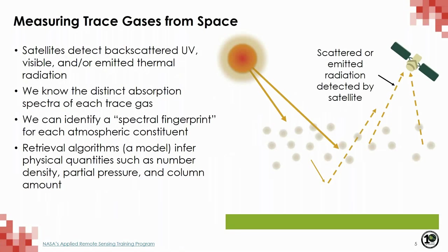Satellites detect the backscattered and/or emitted thermal radiation, a process represented in this graphic on your screen. Each trace gas has a distinct spectra. So if we know how and by what amount different molecules absorb radiation at different wavelengths, we can identify a fingerprint for each atmospheric constituent. Based on the radiation detected by the instrument, retrieval algorithms or a model are used to infer physical quantities, such as number density, partial pressure, or column amount.